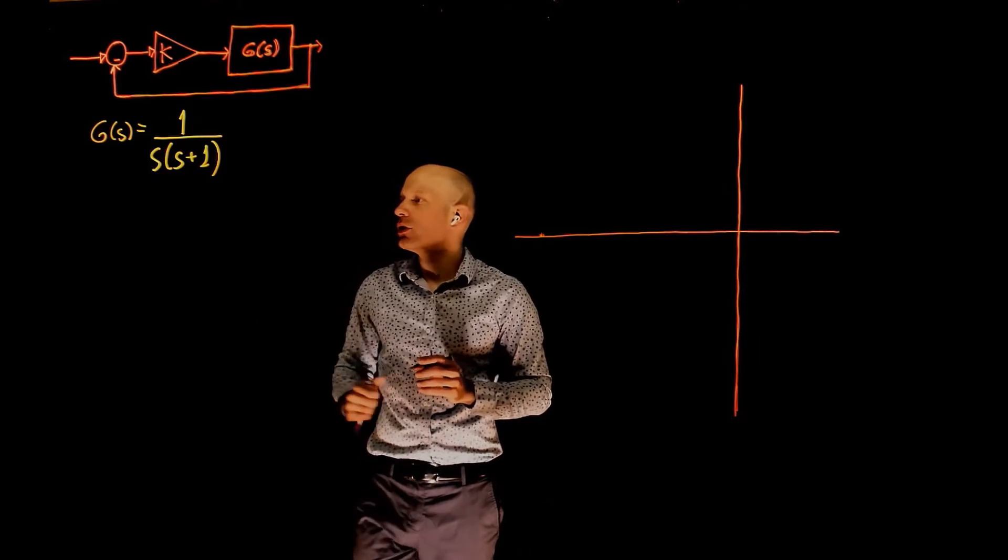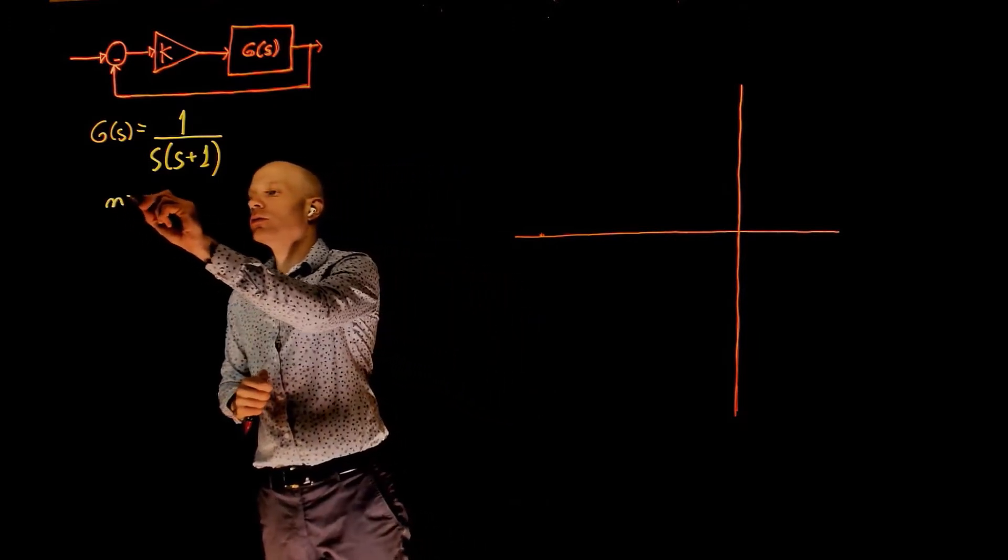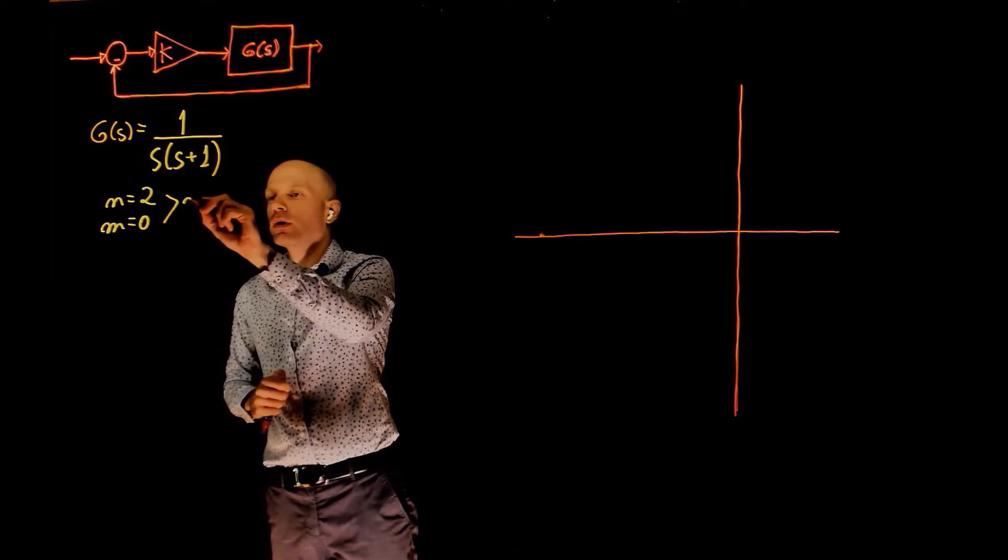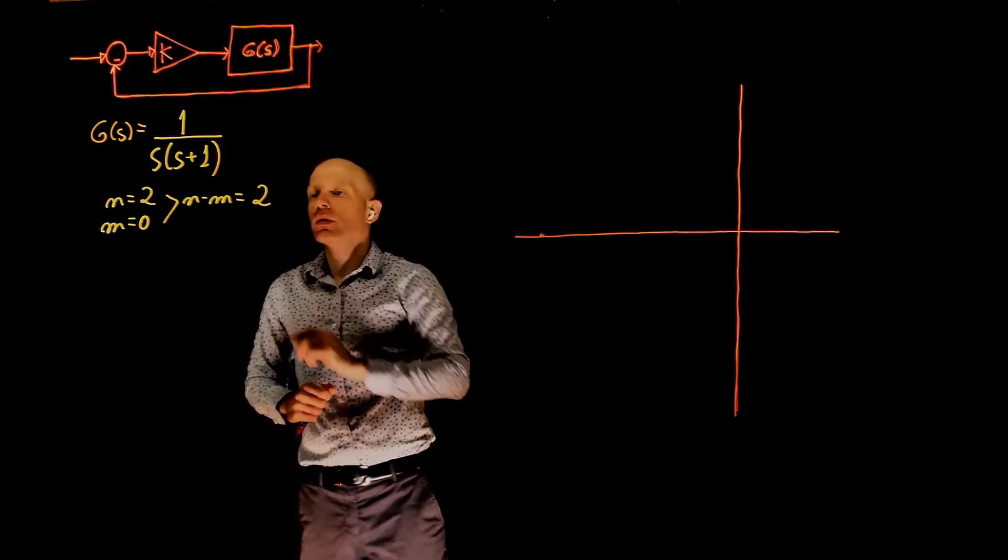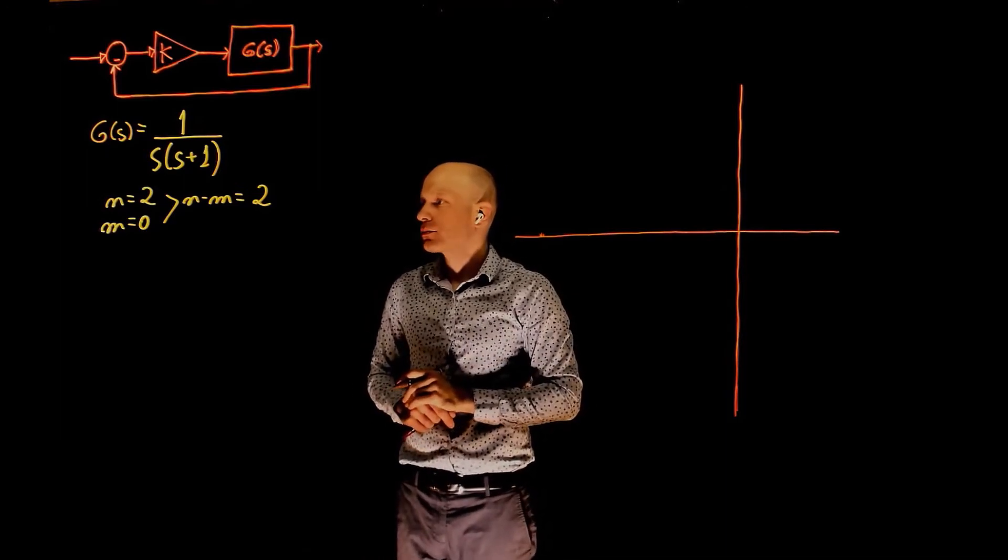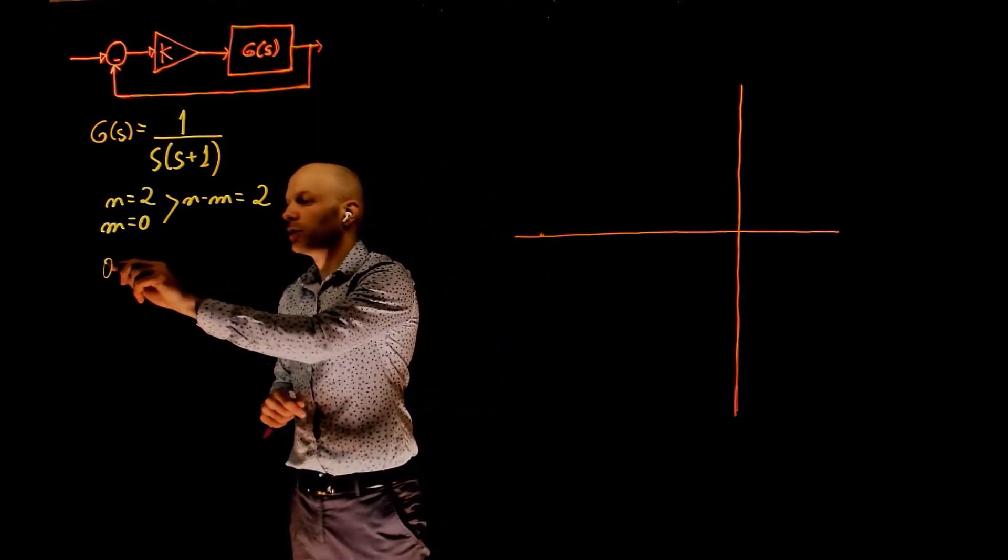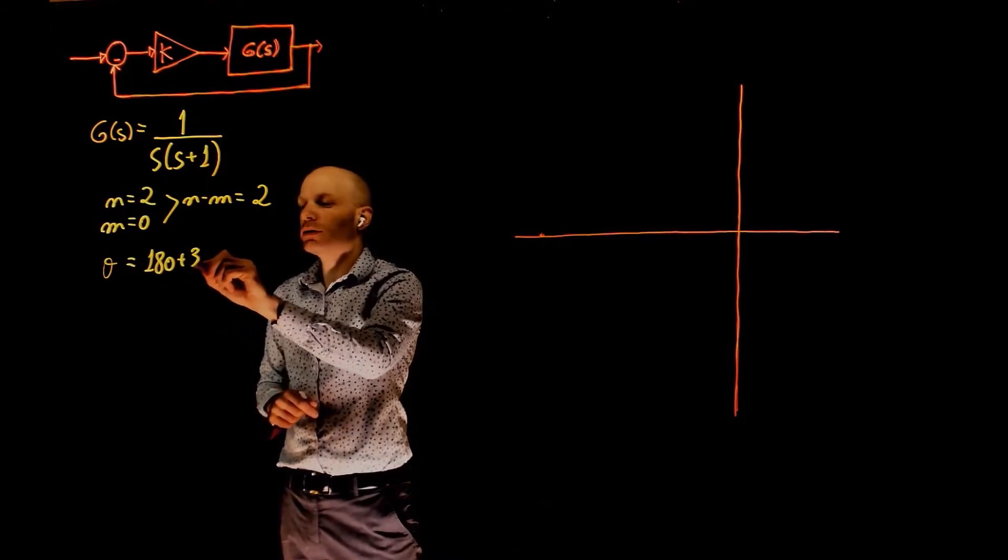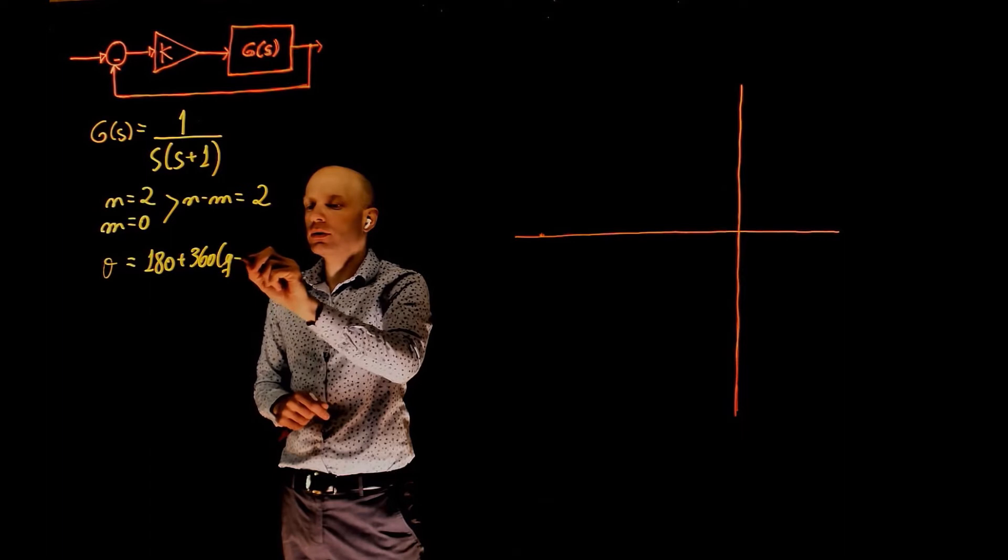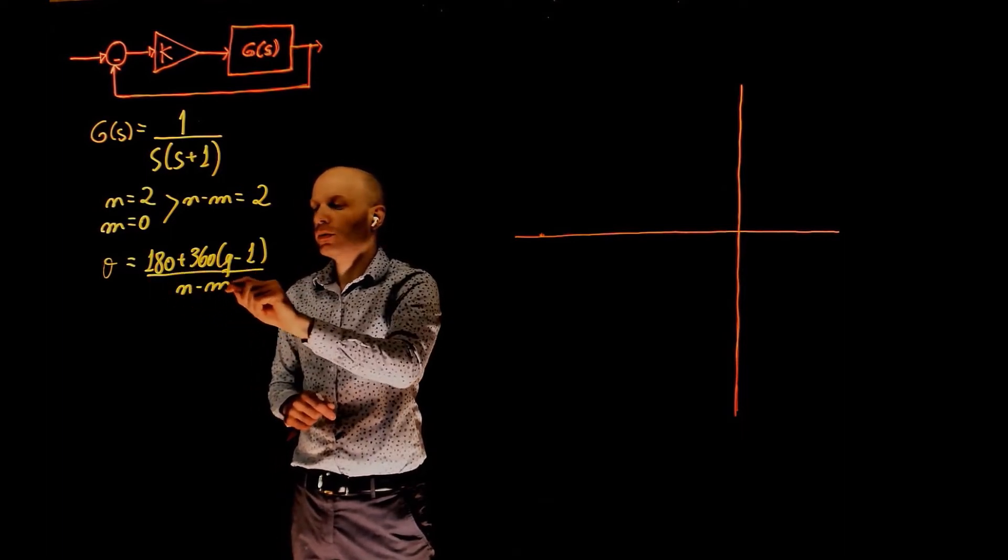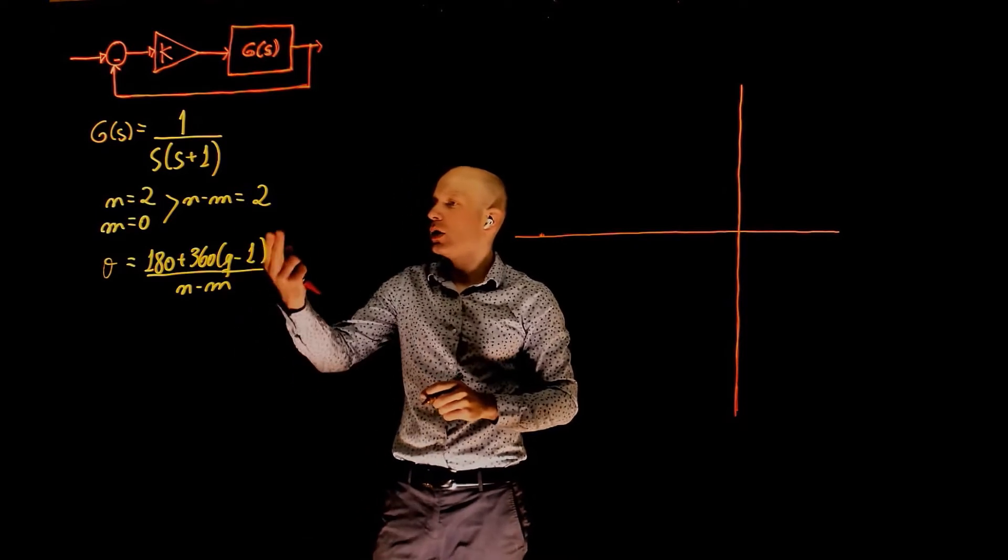You can do that analysis based on the open loop transfer function. This transfer function has two poles and no zeros, so n minus m equals 2. We have two asymptotes going to infinity. Those asymptotes can be calculated as 180 plus 360 times q minus 1 divided by n minus m, where q is 1 and 2.